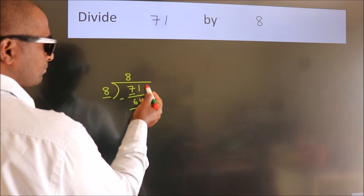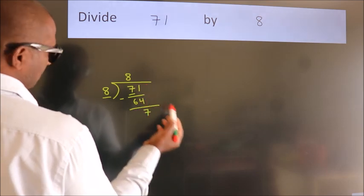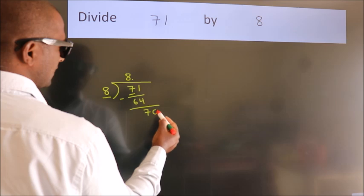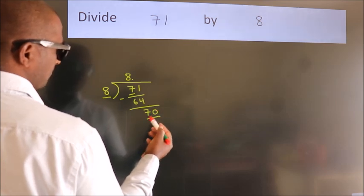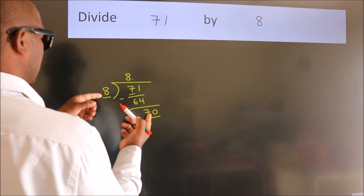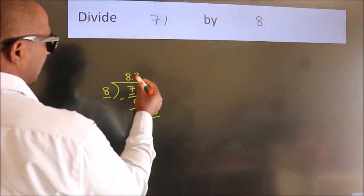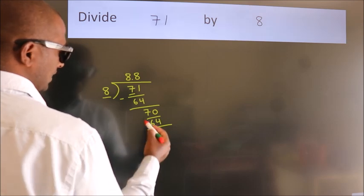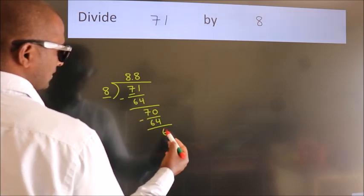After this, no more numbers to bring down. So what we do is put a dot and take 0. So 70. A number close to 70 in the 8 table is 8 times 8, 64. Now we subtract. We get 6.